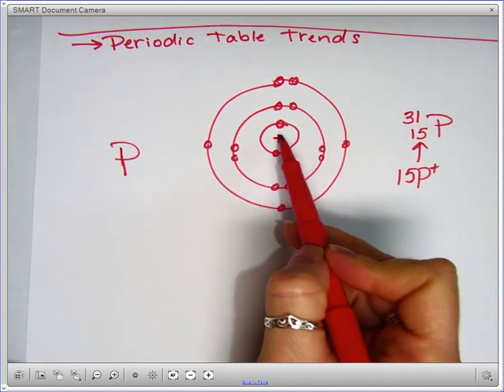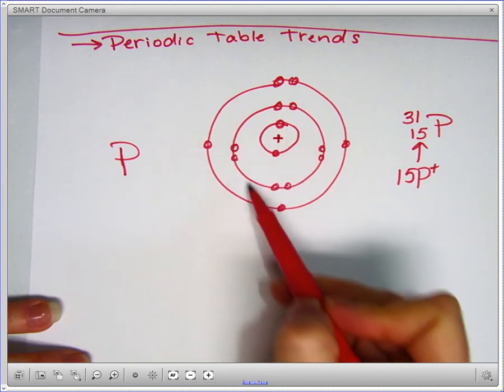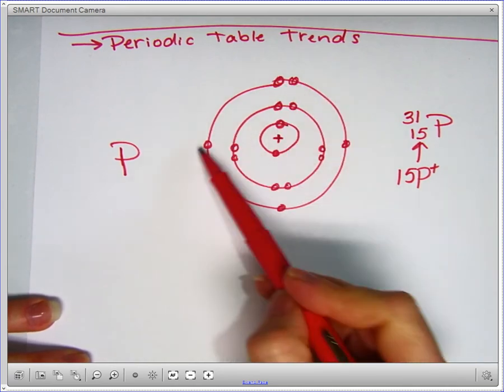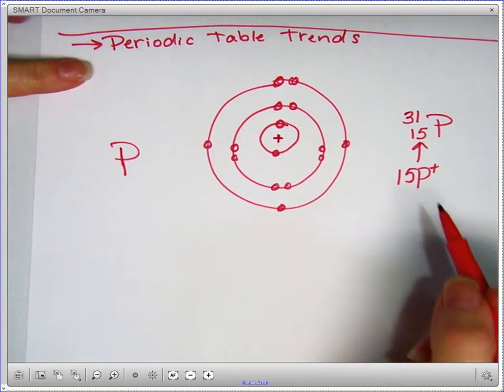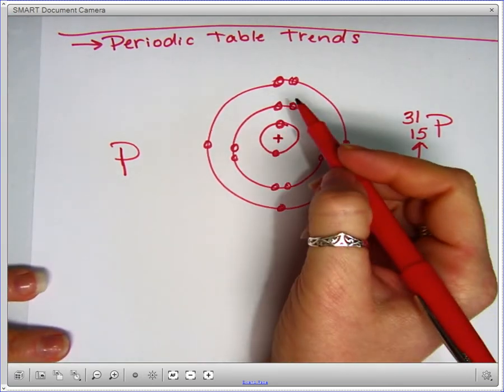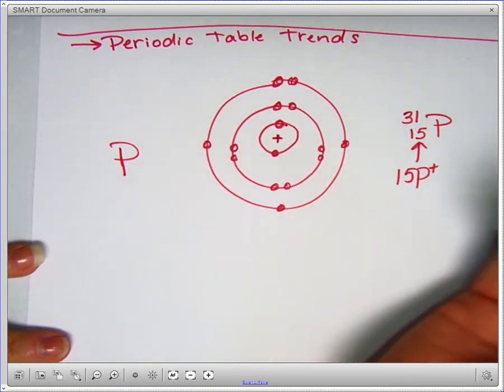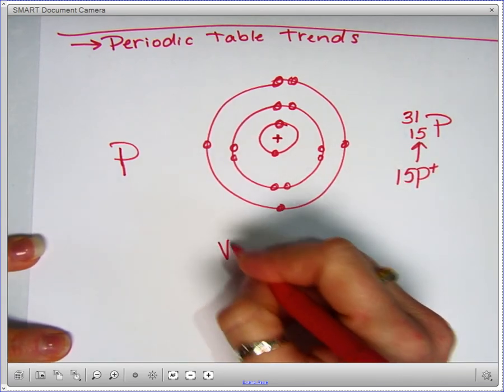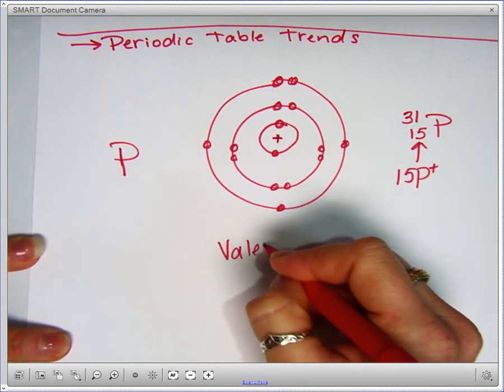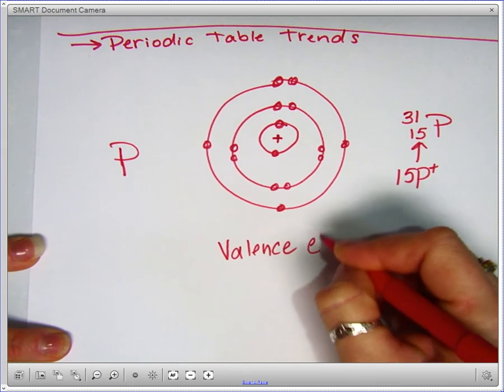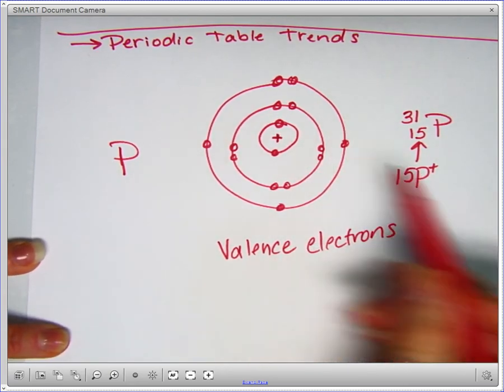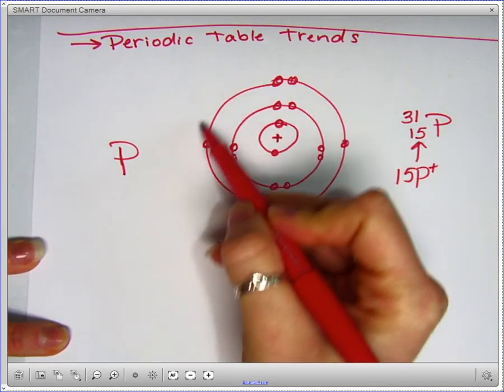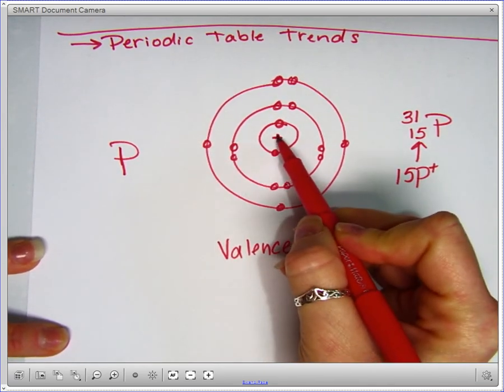So I'm just going to put a positive charge there just to remind ourselves that in the center of the atom is where all the positive charge is concentrated. And then surrounding that positive charge are the negatively charged electrons, which we are representing here. Now the shielding occurs between those outermost electrons, which are called valence electrons.